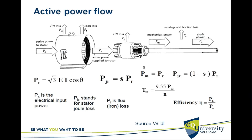The motor torque is 9.55 × Pm / n, where n is the speed. Therefore, the efficiency is the useful shaft power output PL divided by the electrical power input Pe.